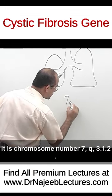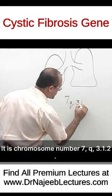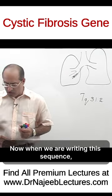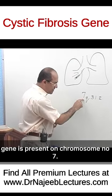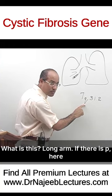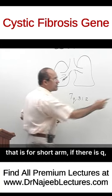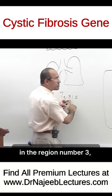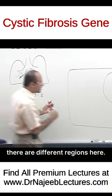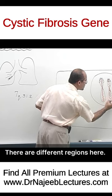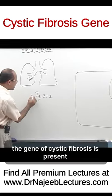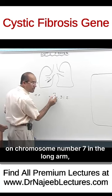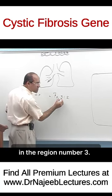It is chromosome number 7, Q, 3-point. When we are writing this sequence, this gene is present on chromosome number 7. What is Q? It is the long arm. If there is P, that is for short arm; if there is Q, this is the long arm. So we can say the gene of cystic fibrosis is present on chromosome number 7, in the long arm, in region number 3.